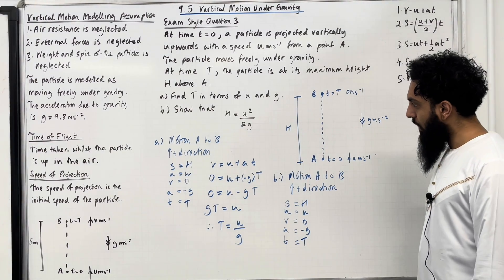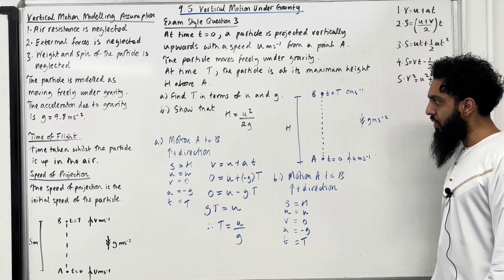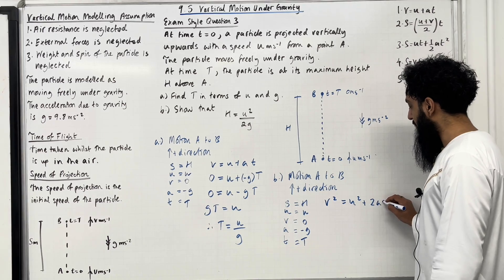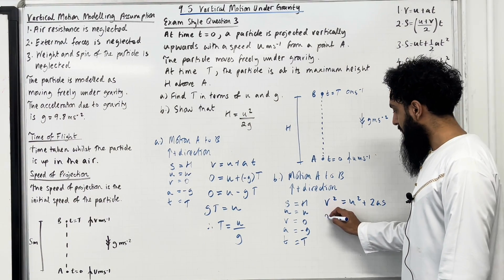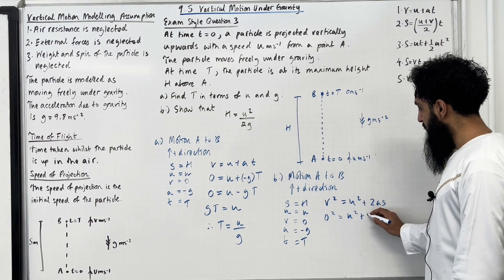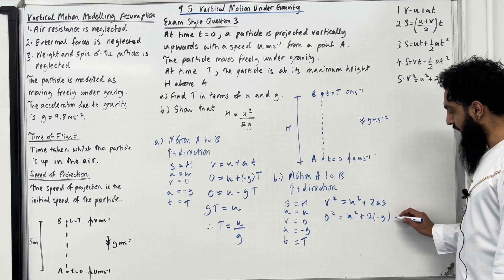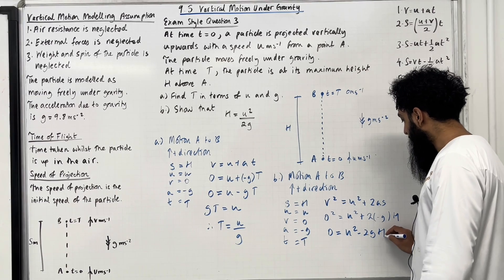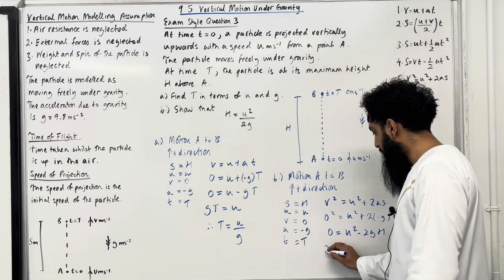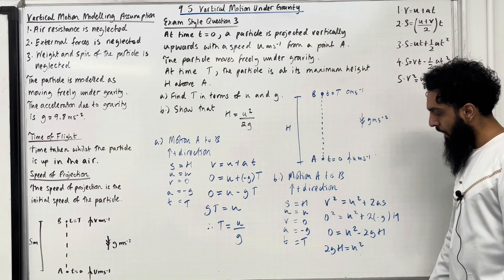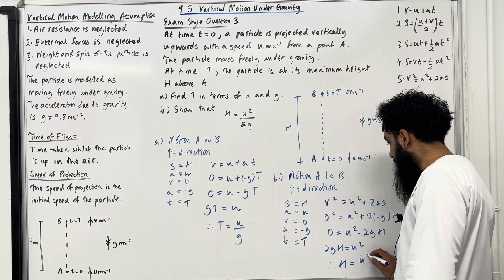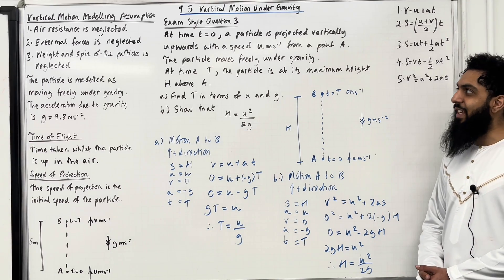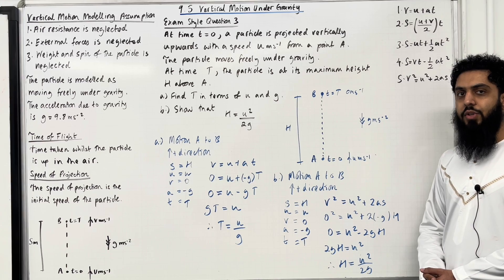Since the answer involves u², the SUVAT formula to use is v² = u² + 2as. Substituting: 0² = u² + 2(−g)(H), giving 0 = u² − 2gH. Rearranging: 2gH = u², therefore H = u²/2g as required. That completes exam style question 3 and this teaching video on 9.5 vertical motion under gravity.